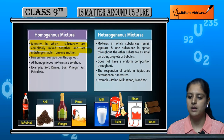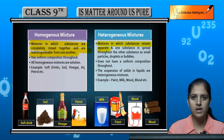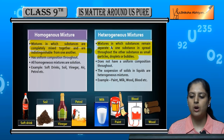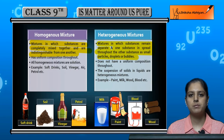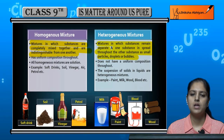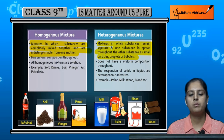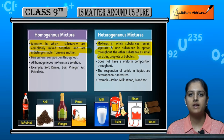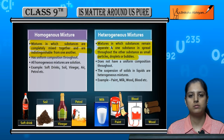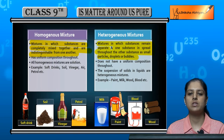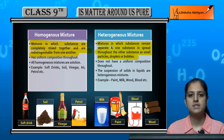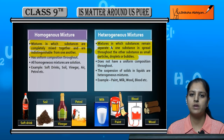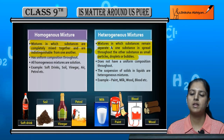Heterogeneous mixtures are mixtures in which substances remain separate, where one substance is spread throughout the other as small particles, droplets, or bubbles. For example, if we dissolve chalk powder in water, the particles remain undissolved because chalk cannot dissolve. You can easily distinguish that it is water and that chalk has been added to it. The solid chalk particles are suspended in the water — we can distinguish them.